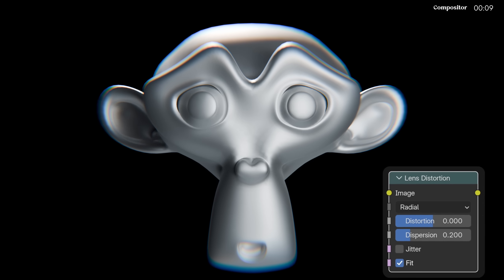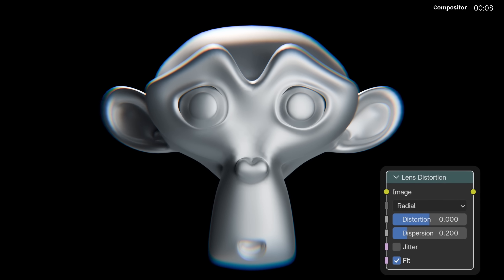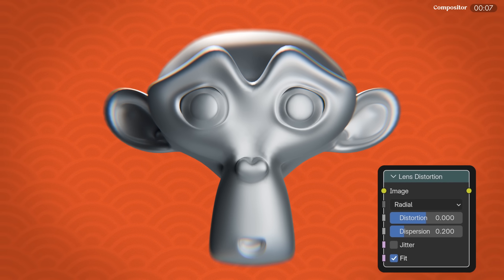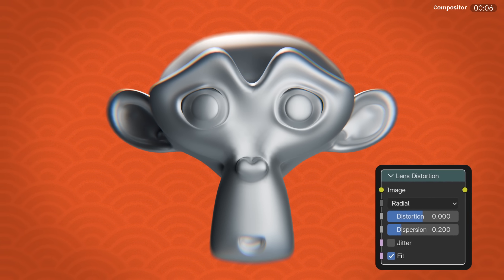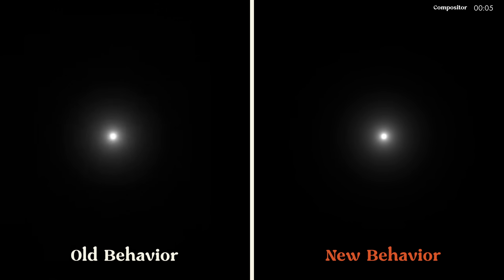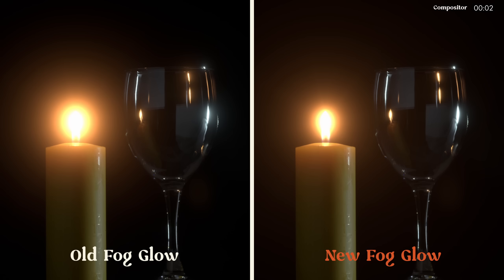Another huge one: the lens distortion node no longer messes up your transparency, but maintains it. Glare has been improved for more stable results with smaller highlights, and the fog glow is now more realistic.